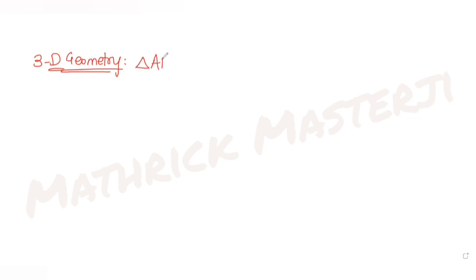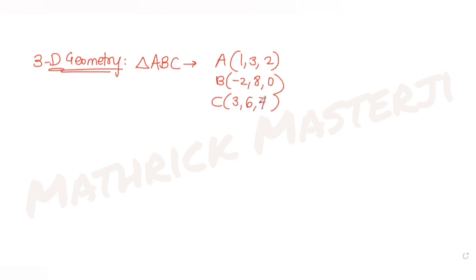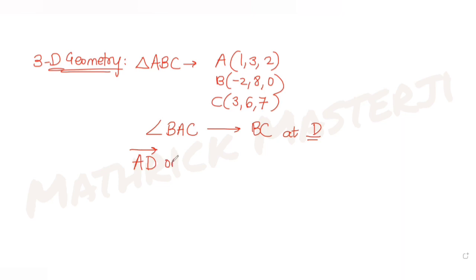Today's question is from the topic of 3D geometry. We are given a triangle ABC where the coordinates are: A is (1, 3, 2), B is (-2, 8, 0), and C is (3, 6, 7). The question tells us that the angle bisector of angle BAC meets the line BC at a point D, and we need to find the length of projection of vector AD on vector AC.